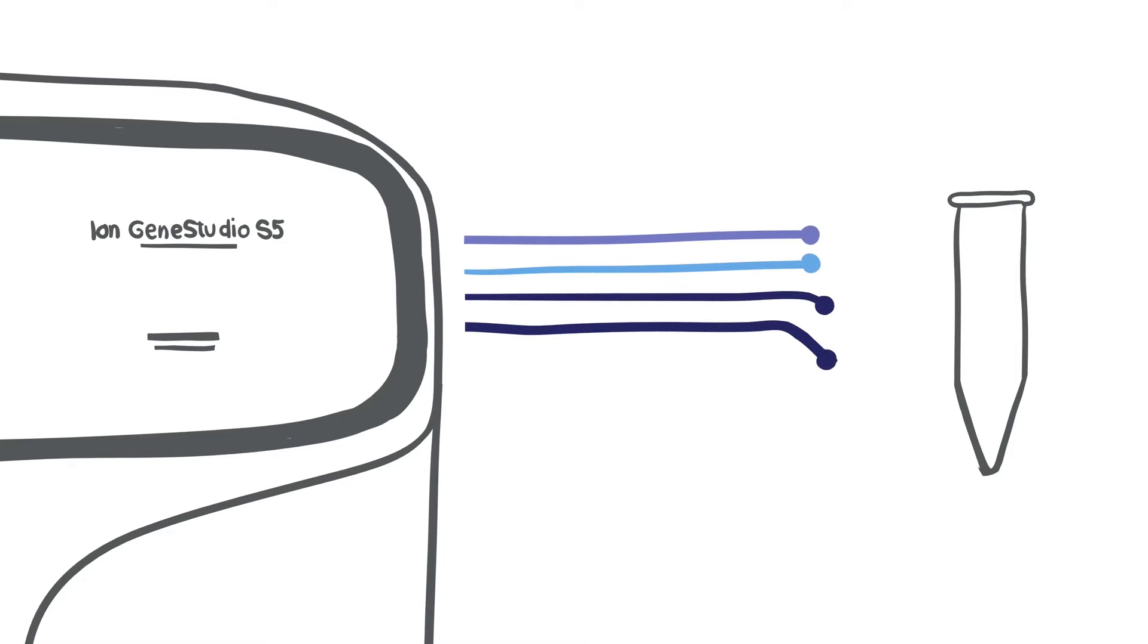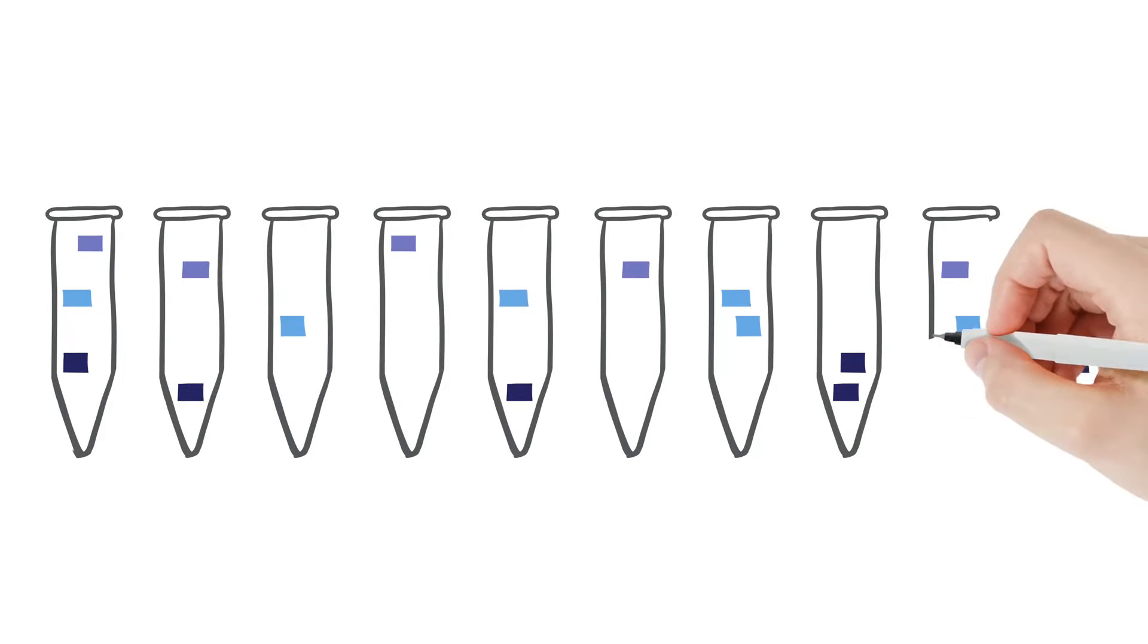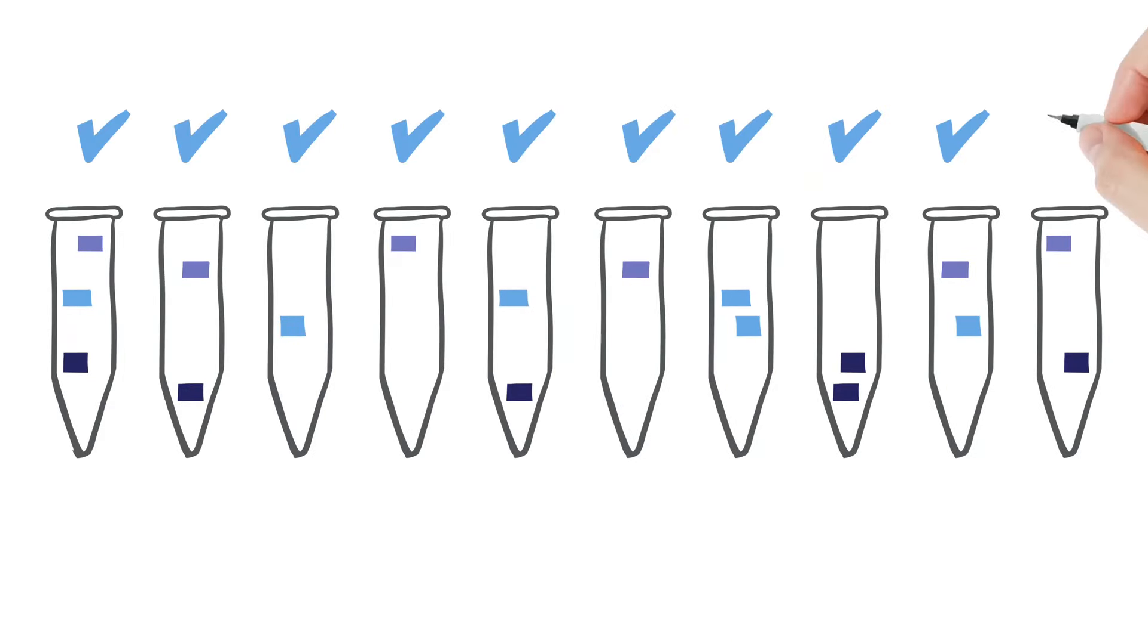With proprietary Ion AmpliSeq technology, a single assay can include multiple receptor targets. By targeting different parts of the cell receptor, this strategy can enable you to detect a result in over 90% of samples.